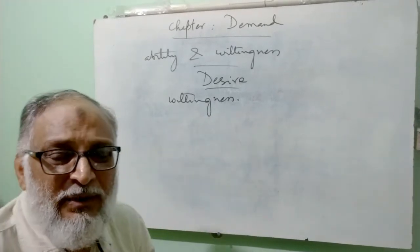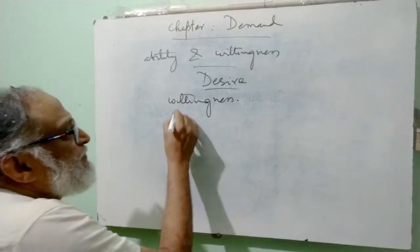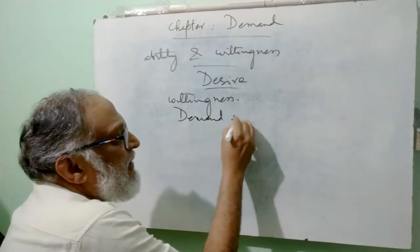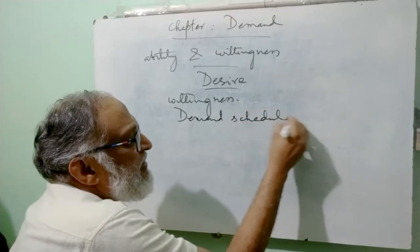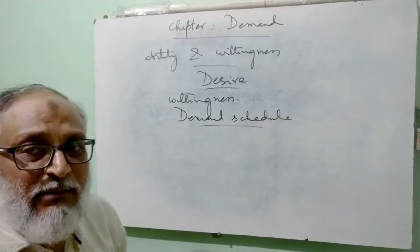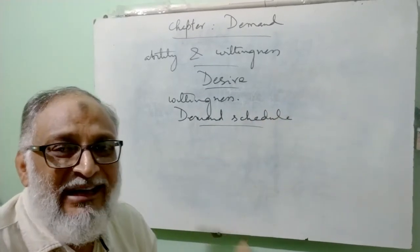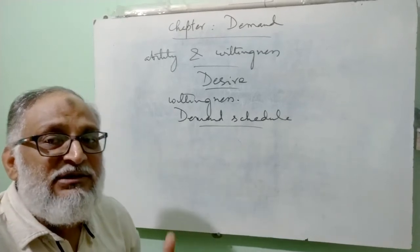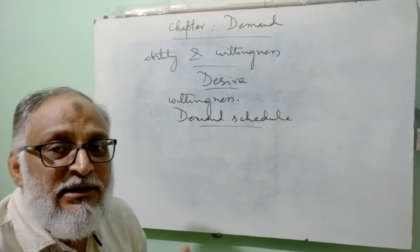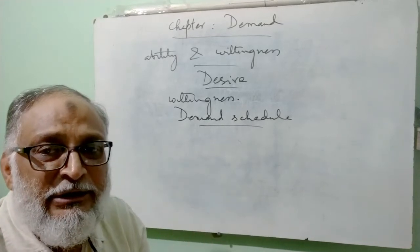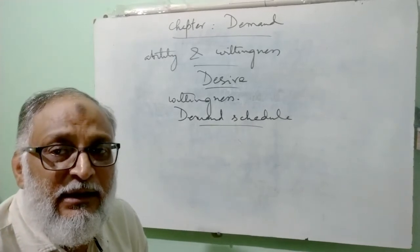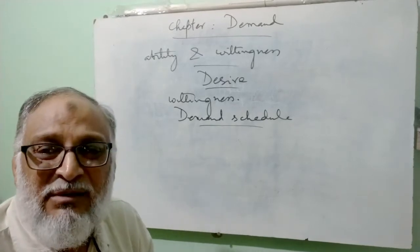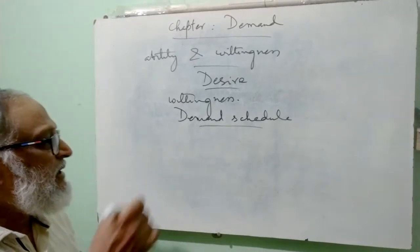After this, there is a small topic — demand schedule. We don't need to spend too much time on it, but since it is given, you should understand it. What does demand schedule mean? It is a type of table — a tabular presentation — by which we can show at which price we would like to buy how much quantity. So it's a tabular presentation of demand at different possible prices.